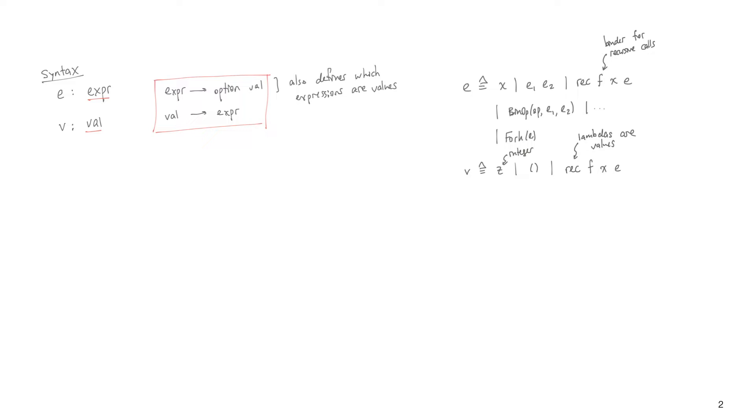In addition, in most blackboard presentations, values would just be a subset of expressions, but the language interface requires them to be a separate type. So there's a difference between an expression lambda and a value lambda when we define this in Coq.